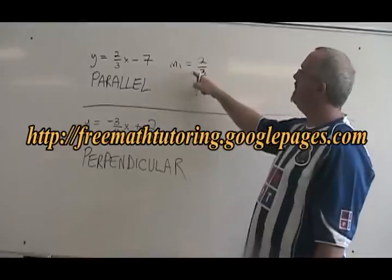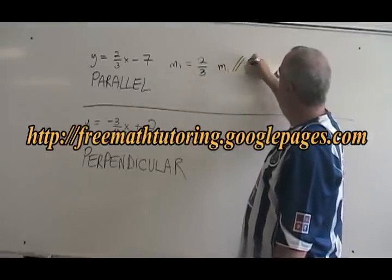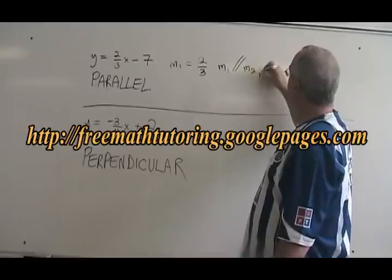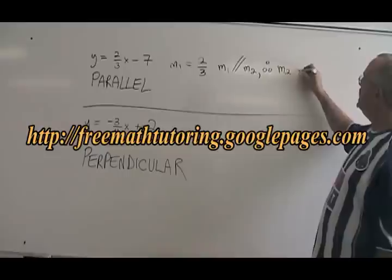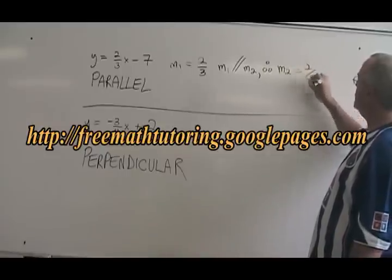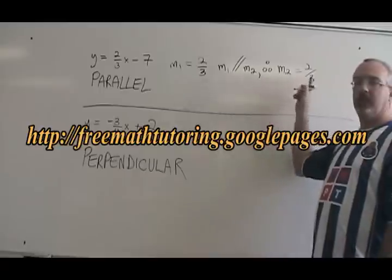We say m1 equals 2 thirds. m1 is parallel to m2. Therefore, the slope of line 2 has to also be equal to 2 thirds. This is called the justification.